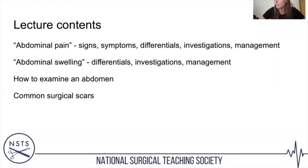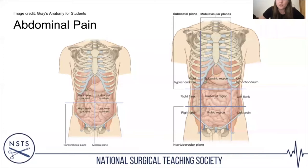When someone presents with abdominal pain, it's useful to visualise and divide the abdomen in a consistent way. You can use the four-quadrant method or split it into nine quadrants. Having that method in your head makes it a lot easier to visualise the anatomy and formulate your list of differential diagnoses.